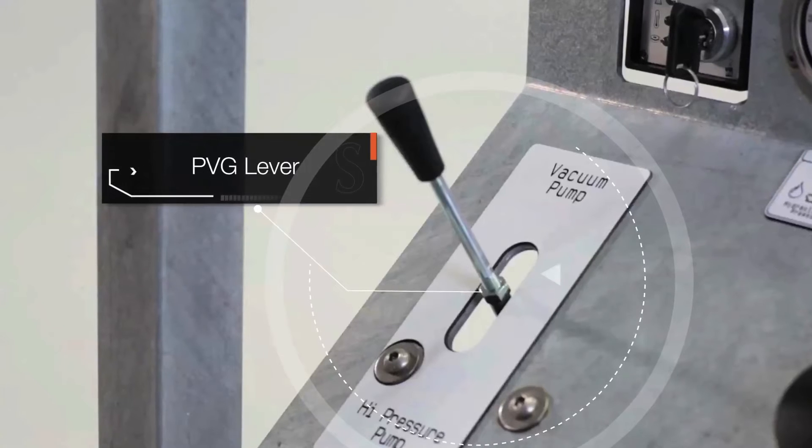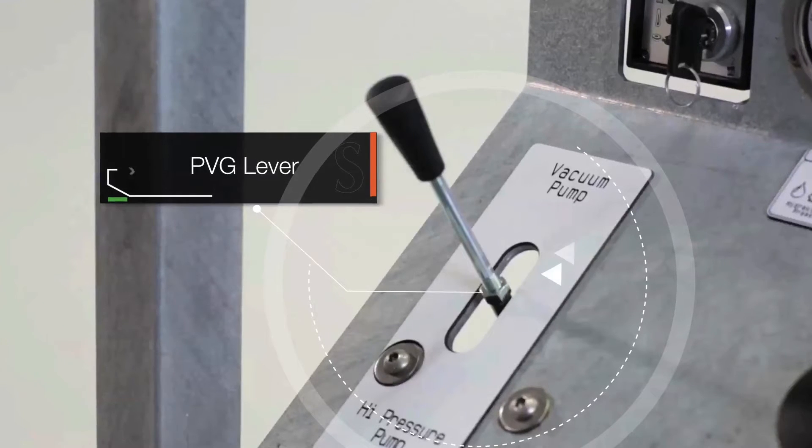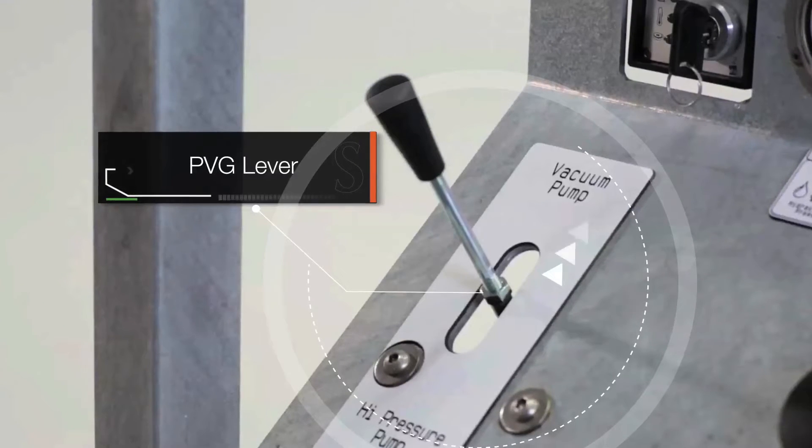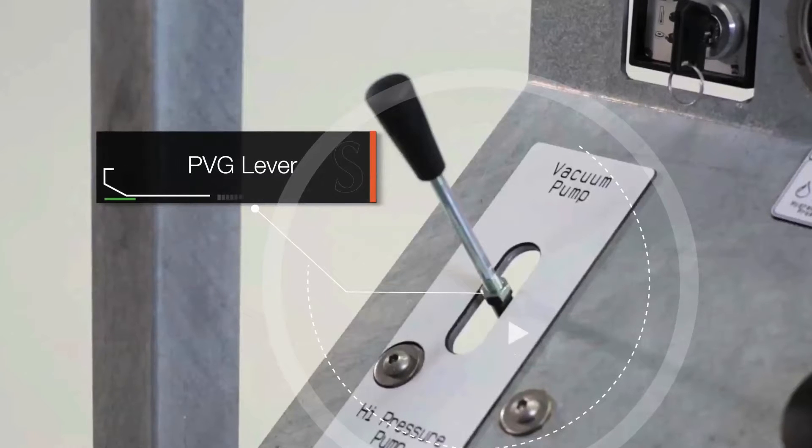The hydraulic control lever regulates the hydraulic oil flow to both the vacuum pump and the high-pressure water pump.